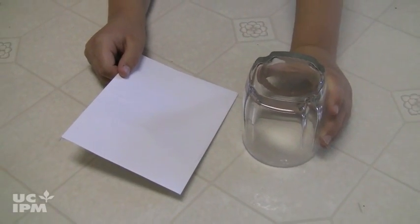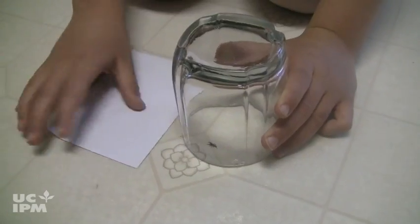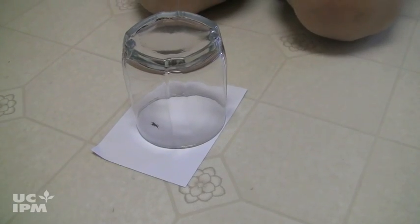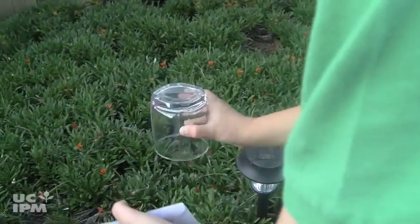Take a jar and a folded piece of paper or an index card. Place the jar quickly and carefully over the spider, then slide the paper underneath to trap the spider in the jar. Take the jar outside and set the spider free.